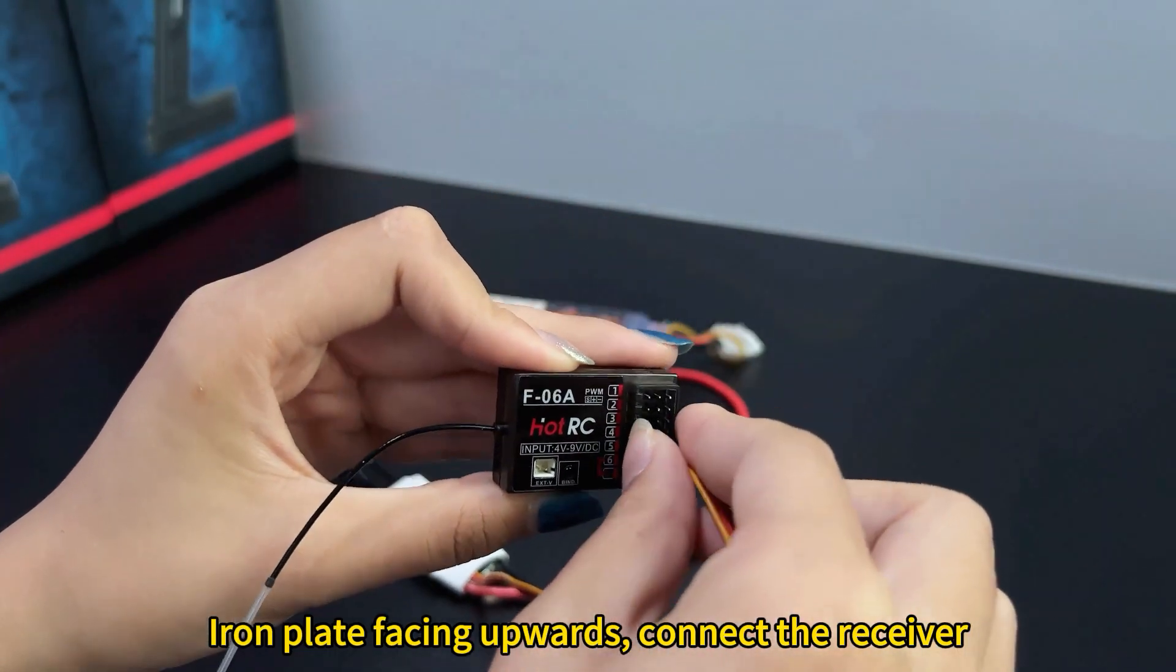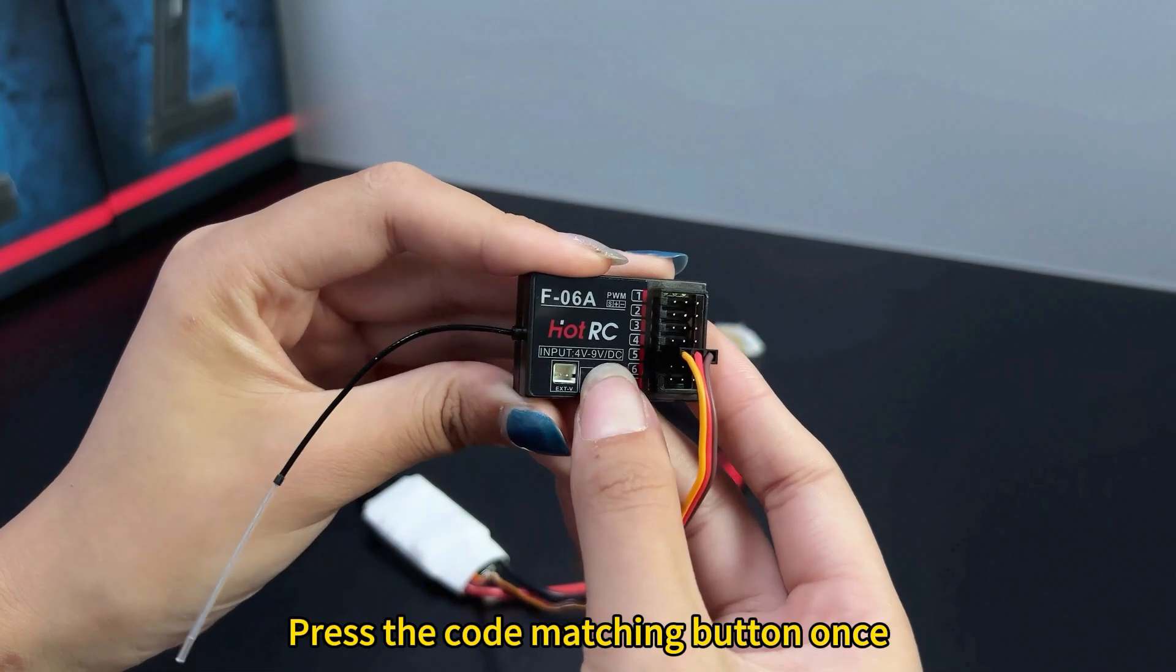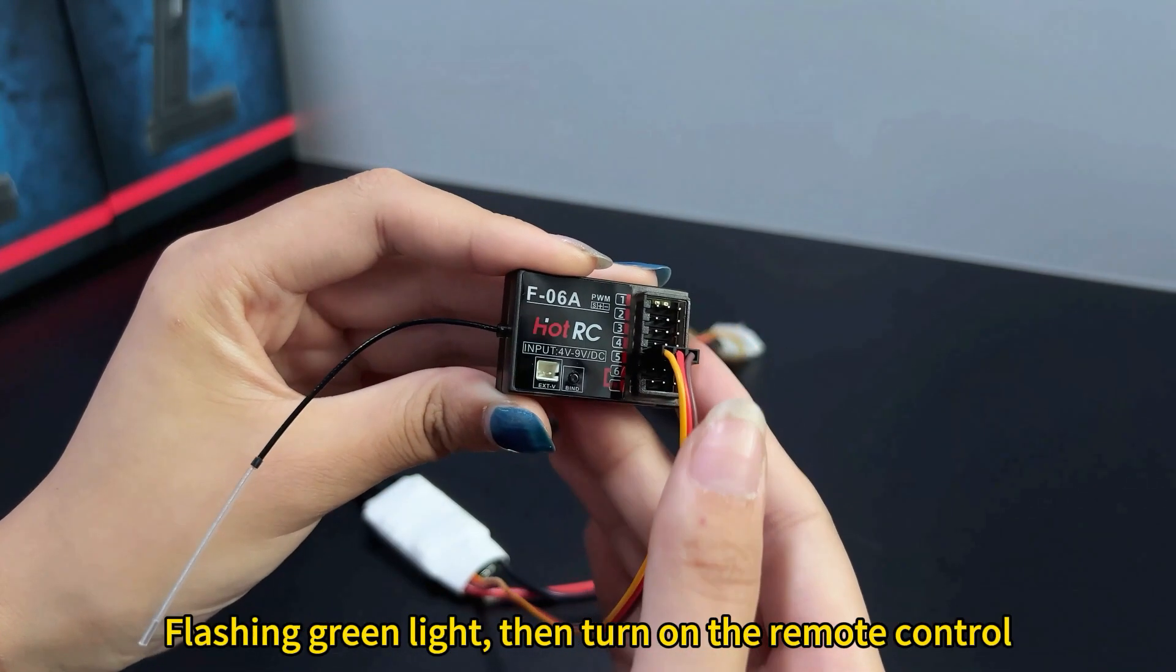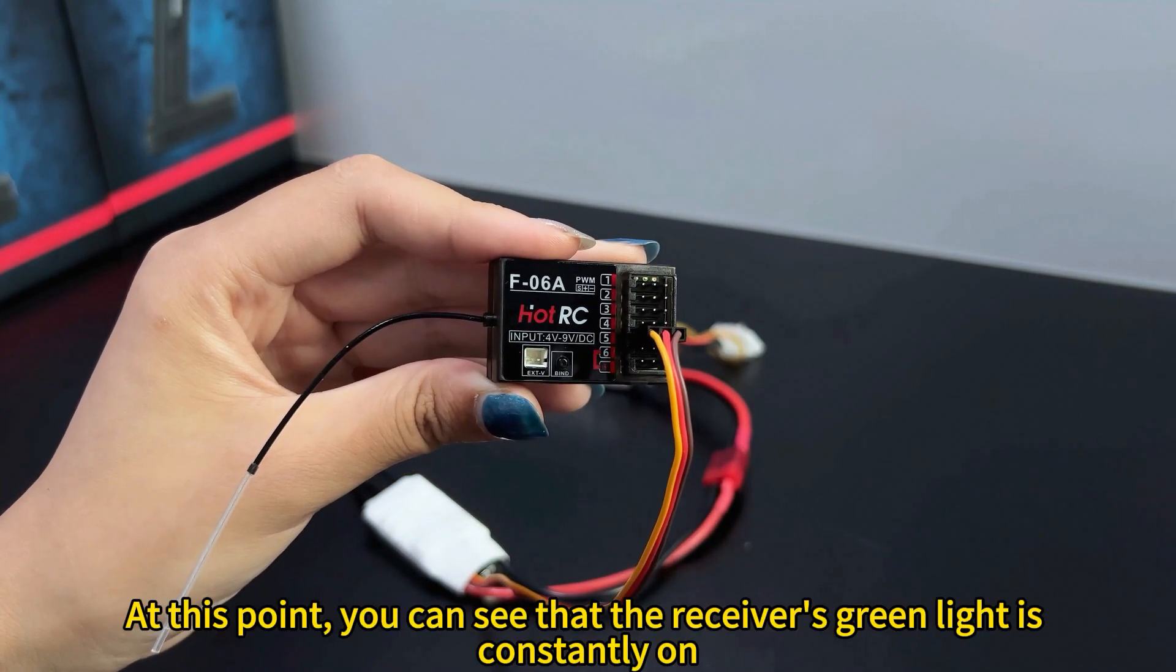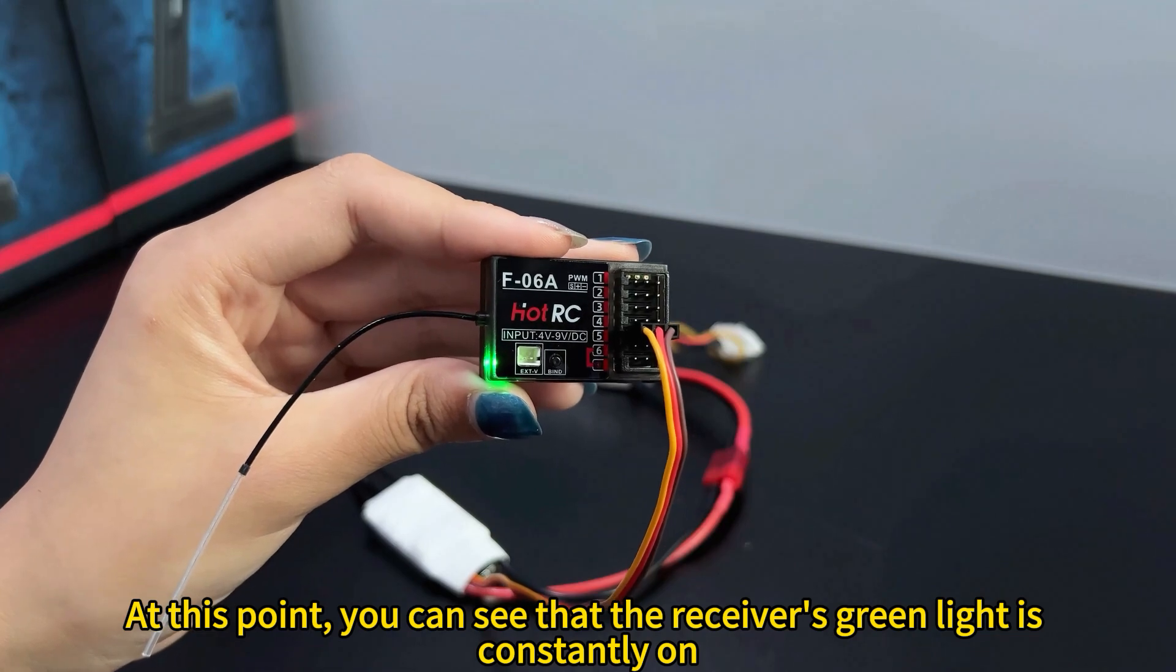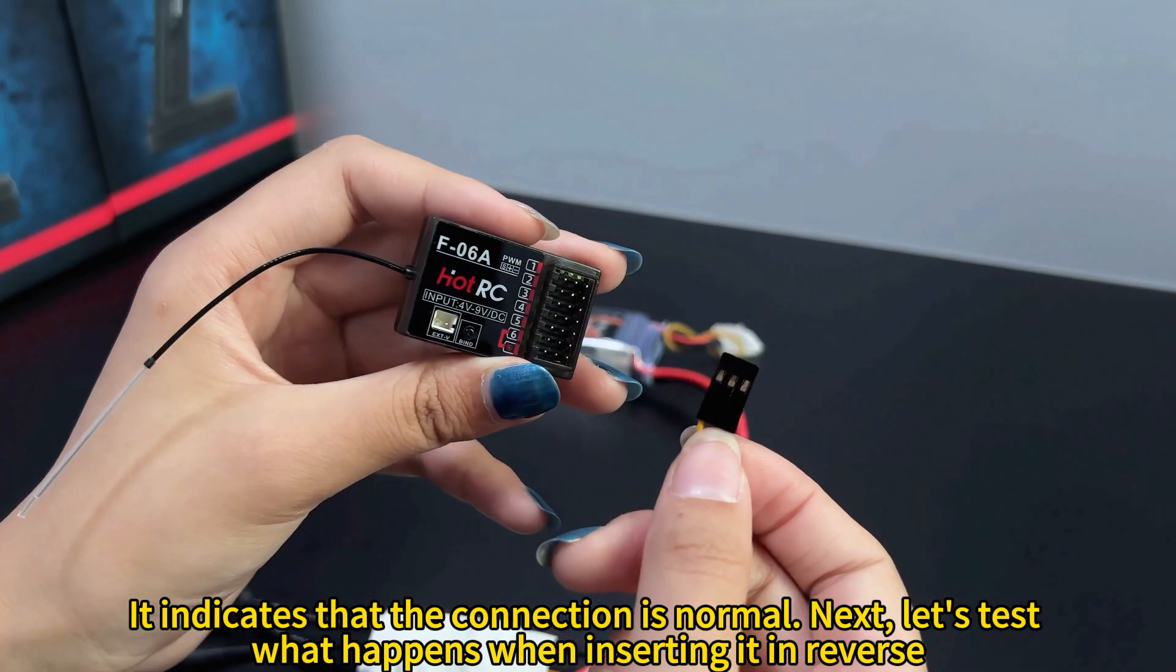Iron plate facing a port. Connect the receiver. The green light is flashing now. Press the code matching button once. Flashing green light. Then turn on the remote control. At this point, you can see that the receiver's green light is constantly on. It indicates that the connection is normal.